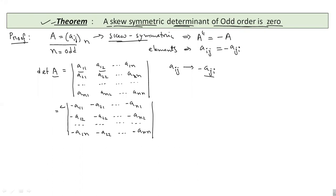Now, see, we can take minus 1 common from each column. Since this is of order n, so we have minus 1 to the power n. And the remaining part is a11, a21 to an1, a12, a22 to an2, a1n, a2n, ann.